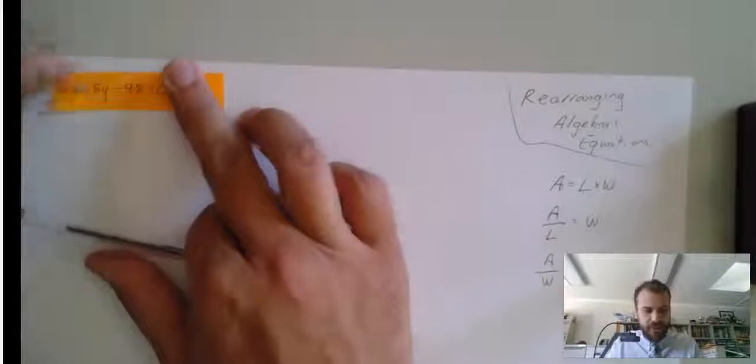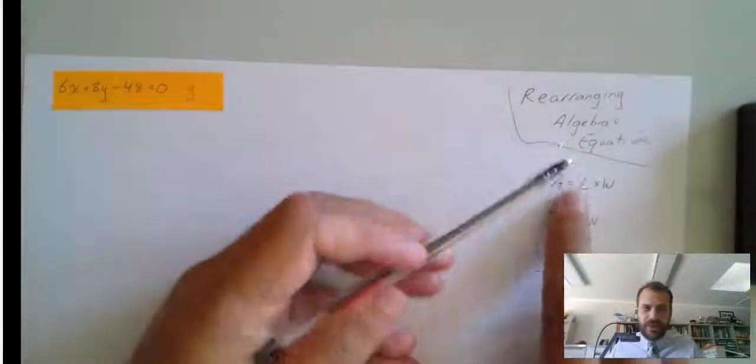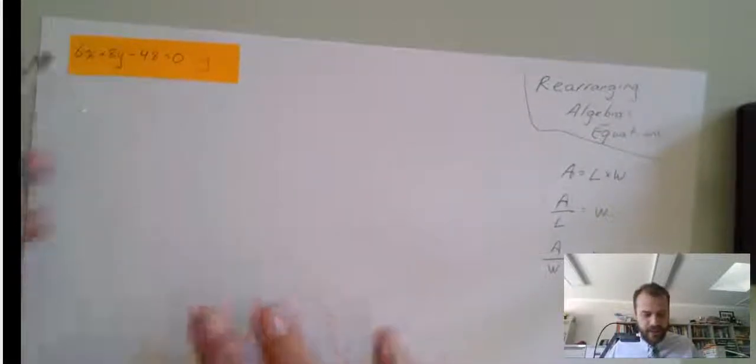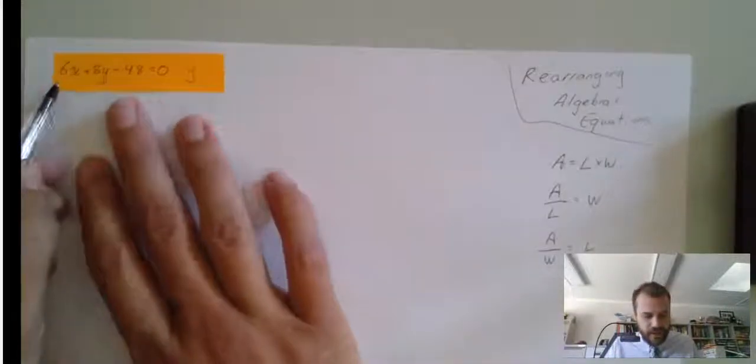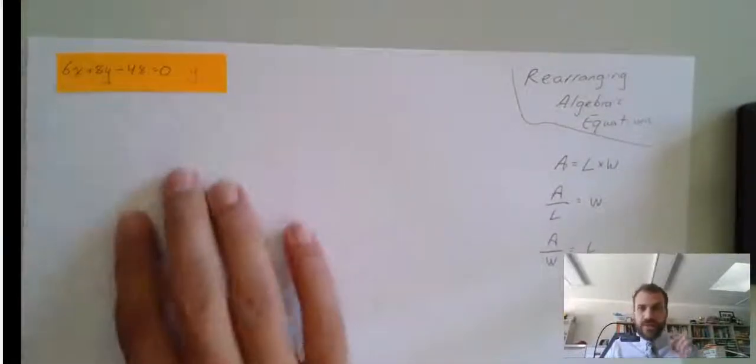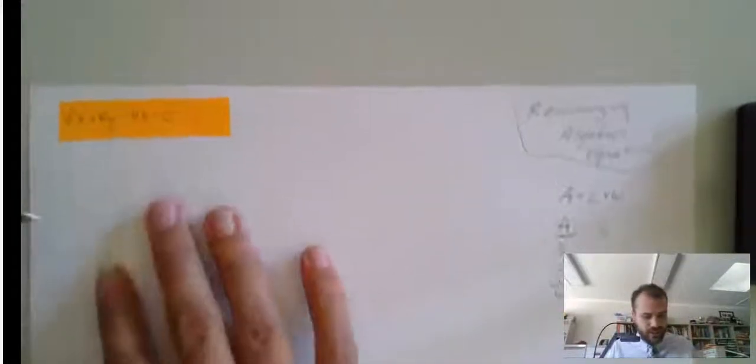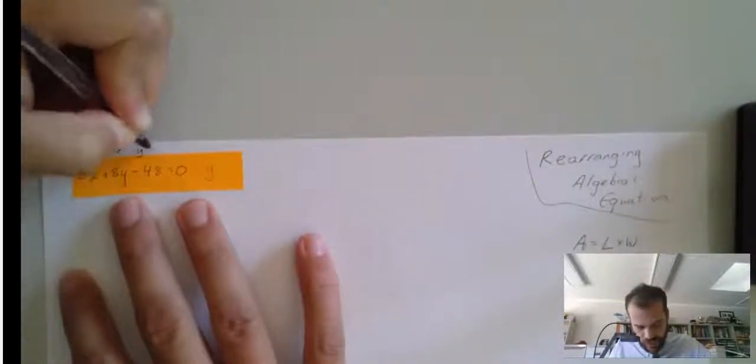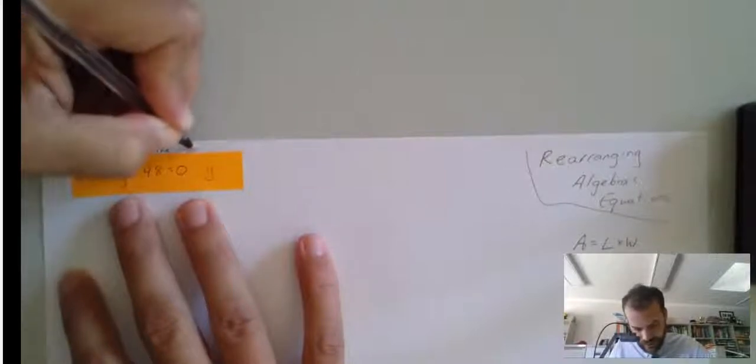Now, I may have misspoke a little bit. An algebraic equation can have numbers and letters. You can see numbers and letters here. Now, in this one, I'm going to rearrange 6x plus 8y minus 48 equals 0 to make y the subject.